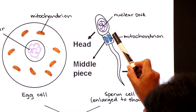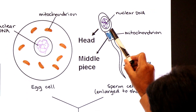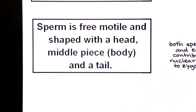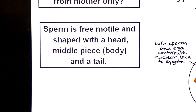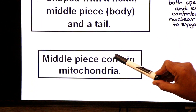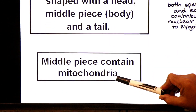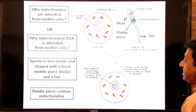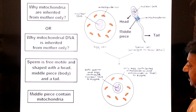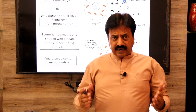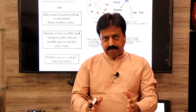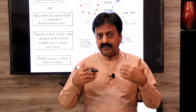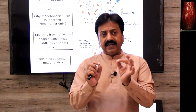Mitochondria are only present in the middle piece of the sperm. The middle piece contains mitochondria. Note that the top part is the head, then the middle piece containing mitochondria, and the tail. Mitochondria are not present in the head or tail — only in the middle piece.